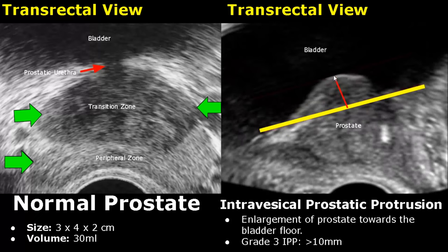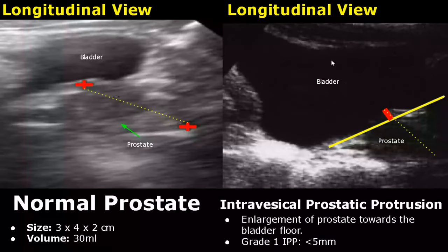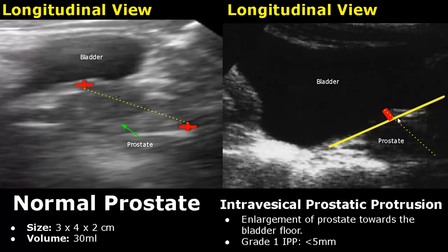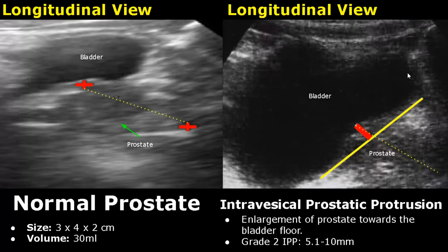In grade 3 intravesical prostatic protrusion, the value will be more than 10 mm. Now we have a transabdominal approach with longitudinal views. This is the imaginary line for easier understanding of protrusion, and the grading is similar. Grade 1 IPP measures less than 5 mm. This image shows a grade 2 IPP, measuring between 5.1 to 10 mm.